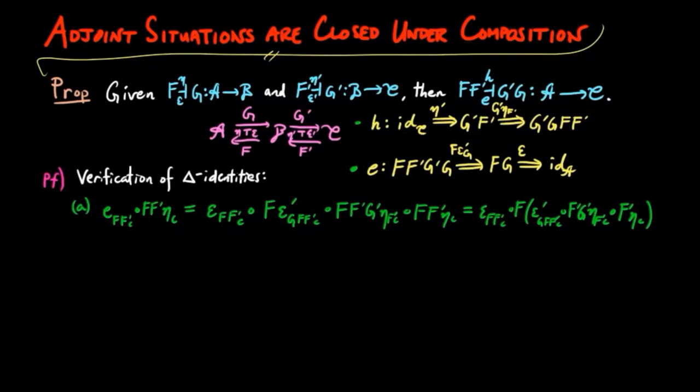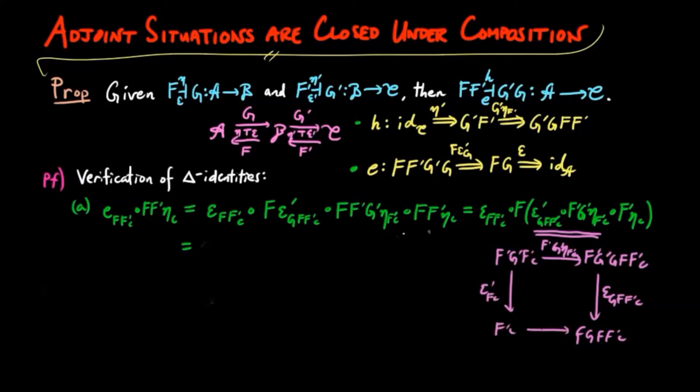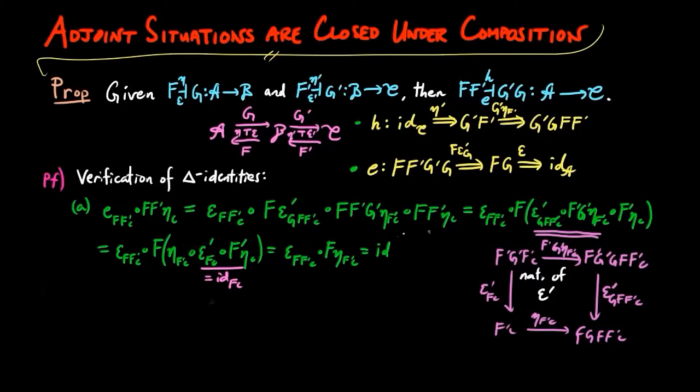We use the naturality of the counit epsilon prime and make the appropriate substitution to obtain epsilon F F prime C composed with F eta F prime C composed with epsilon prime FC composed with F prime eta C. Then by the triangle identity for the adjoint situation F prime G prime, we arrive at epsilon F F prime C composed with F eta F prime C, which is the identity on F F prime C by the triangle identity for FG.